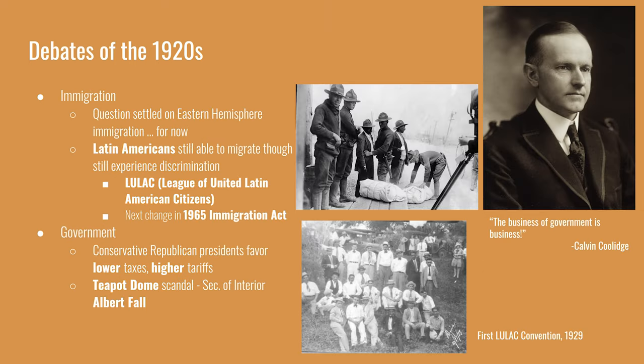The final debate concerns immigration and the government's role. The question of Eastern Hemisphere immigration had been settled through the 1921 and 1924 Quota Acts. Though Latin Americans could still migrate to the U.S. and take jobs, they still had to endure greater surveillance crossing the border — border patrol checked for weapons, and people were frisked or targeted due to prejudice. Latin American and Mexican-American advocacy groups formed to push back. LULAC, the League of United Latin American Citizens, met for the first time in 1929 and continues to be active today. The next change in immigration legislation came with the 1965 Immigration Act under the LBJ administration.